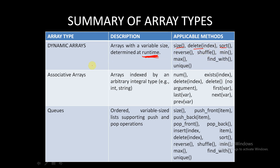For associative arrays — arrays indexed by an arbitrary data type such as `int` or `string` — the applicable built-in methods are: `num`, `exists`, `delete` (with or without argument), `first`, `last`, `next`, and `previous`.